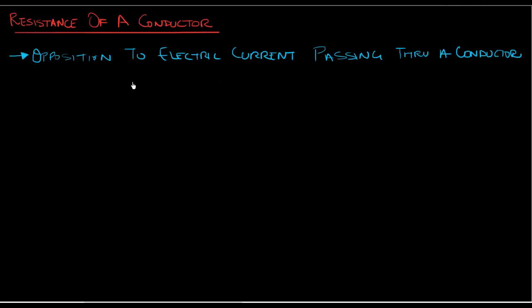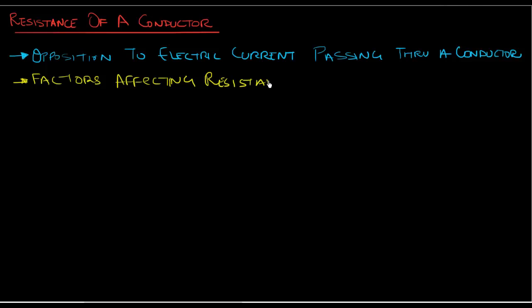What are some of the factors that this resistance — this opposition — depends upon? There are three basic factors affecting resistance. The first is the material: what material is our conductor made of? For example, is it a copper conductor or an aluminum conductor?